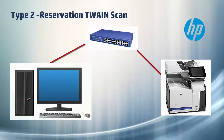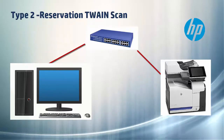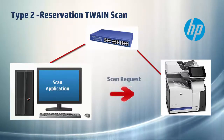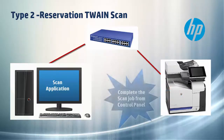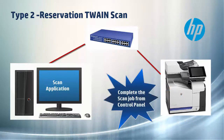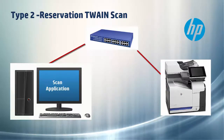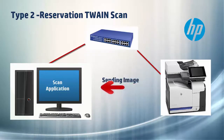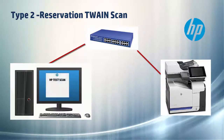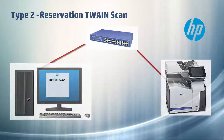Type 2 is a reservation Twain scan. In this process the user initiates a scan request from the Twain scan application. However, the scanning process is initiated only after the user completes the reserved job from the control panel of the MFP. The original is then scanned and the image is sent to the PC Twain application. This is helpful particularly in an enterprise environment where there are multiple people using the same scanning device.